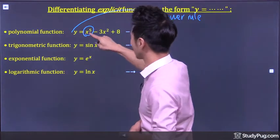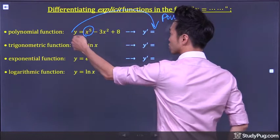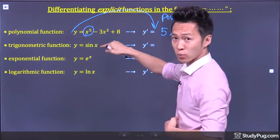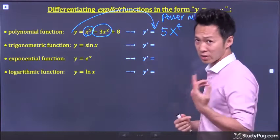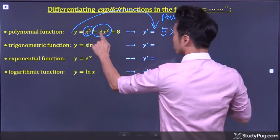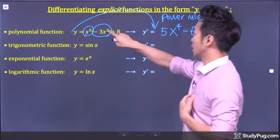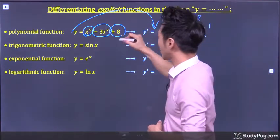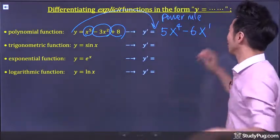Applying the power rule to find the derivative of the first term: bring the exponent 5 to the front, x, then exponent 5 subtracts 1, we get 4. Second term: applying the power rule again, bring the exponent 2 to the front times negative 3, we get negative 6x. Then the exponent 2 subtracts 1, we get 1. Last term, positive 8 — the derivative of any constant is 0.